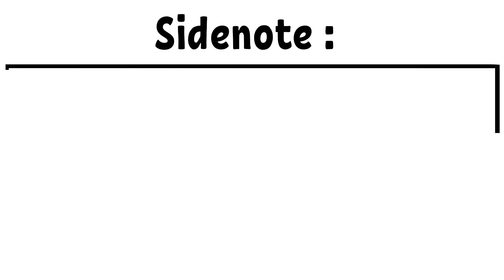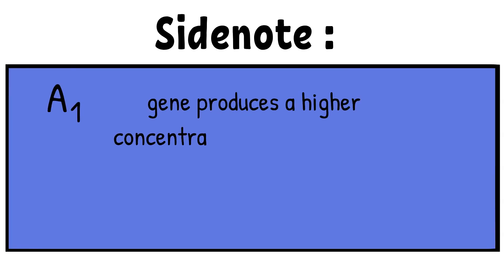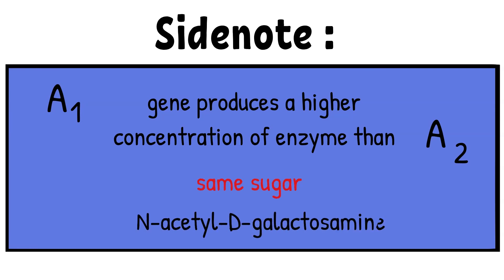Side note, inheritance of an A1 gene produces higher concentrations of enzymes than A2 genes. These higher concentrations of enzymes allow the conversion of almost all H antigen into A1 antigens on the red blood cells. I want to point out that we can classify A subgroup into A1 and A2, but the sugar that converts H antigen into A antigen is still N-acetyl-D-galactosamine.